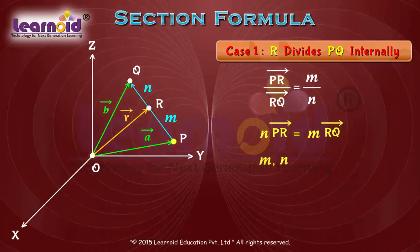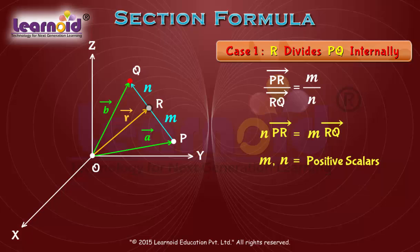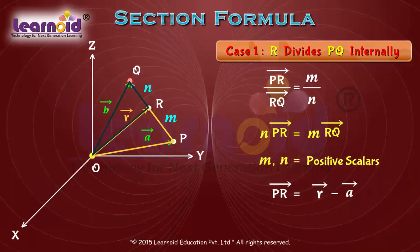Where m and n are positive scalars. From triangles OPR and ORQ, we can write PR vector is equal to r vector minus a vector, and RQ vector is equal to b vector minus r vector.